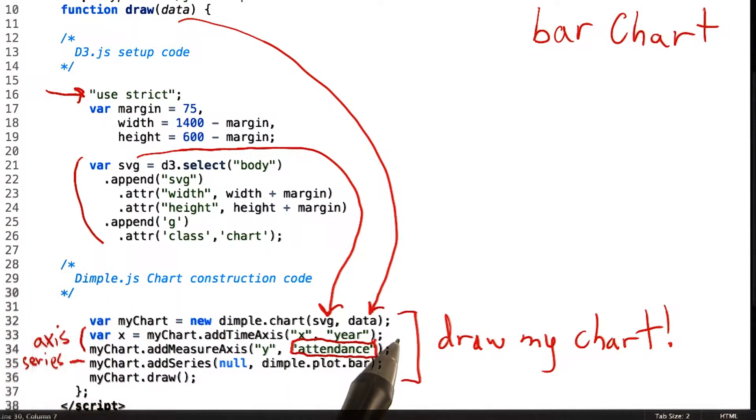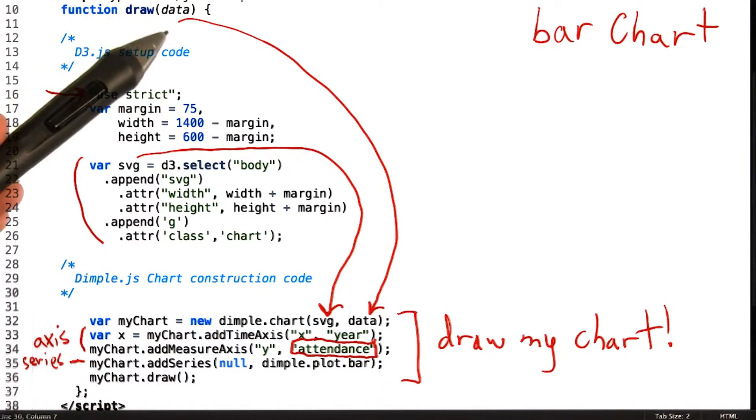The data object passed to dimple.chart is simply the same JavaScript object—in this case, an array of JavaScript object literals.